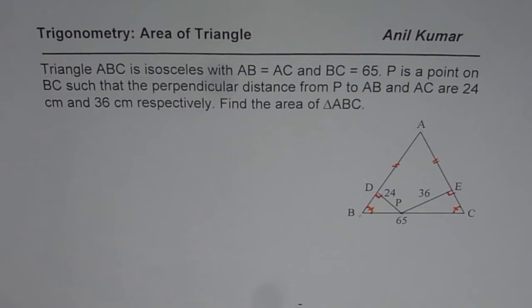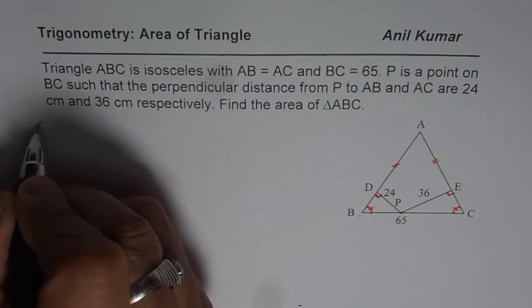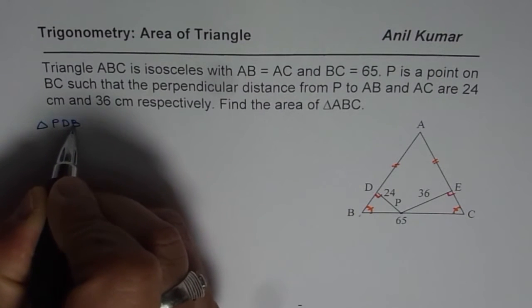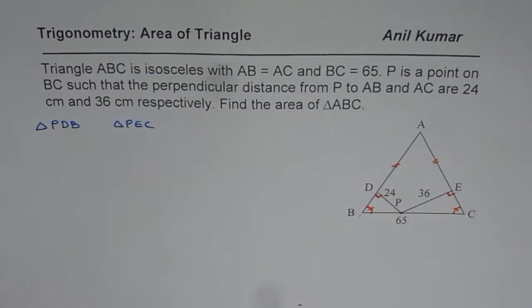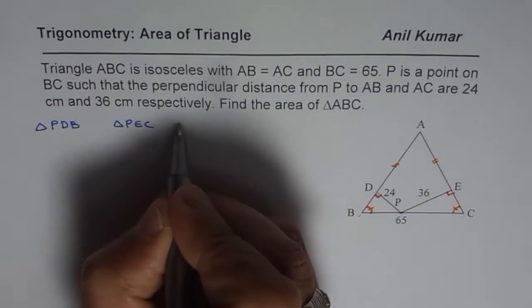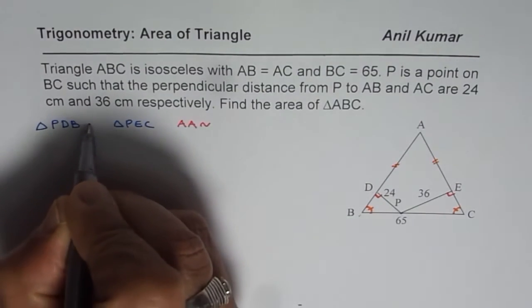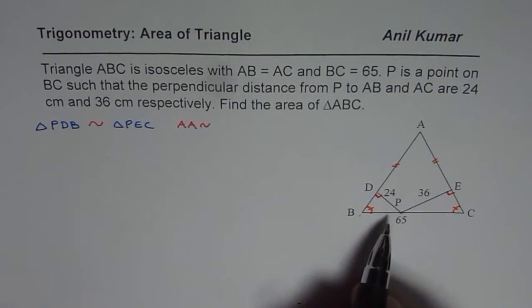Now let me solve this question in the limited space I always have. We can go about this in many different ways, but I will use a couple of principles here. We will begin with similar triangles. Consider triangle PDB and triangle PEC. In these two triangles, you can see 90 degrees and 90 degrees, and since it is an isosceles triangle, these two angles are equal. So because of AA, these two triangles are similar.